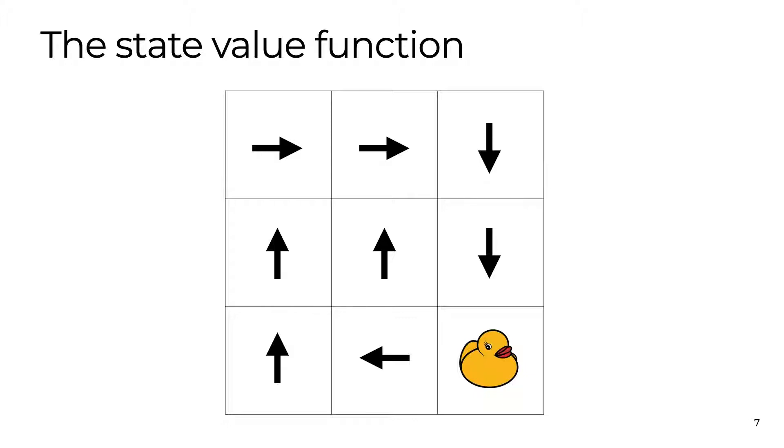Let's look at an example to make things concrete. Imagine we have this 3x3 grid where our objective is to get the duckybot to the ducky in the bottom right corner. Our policy tells us which direction to go in each of the other 8 grid cells. So if we start at the bottom cell, this is the path we will follow to reach the goal.